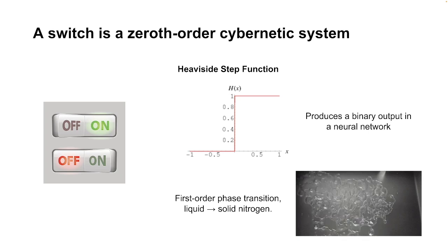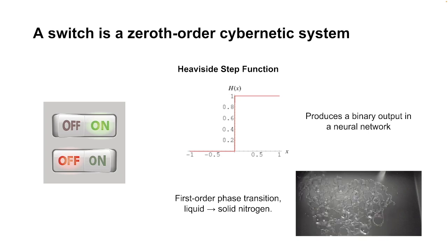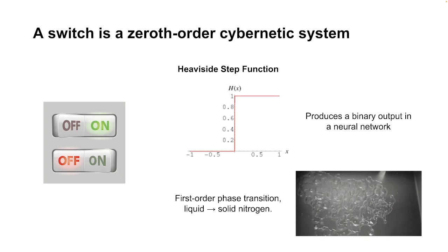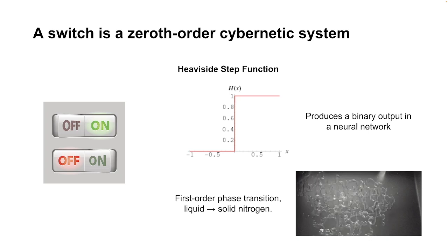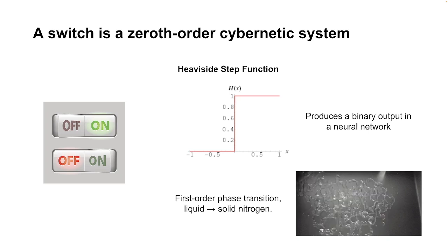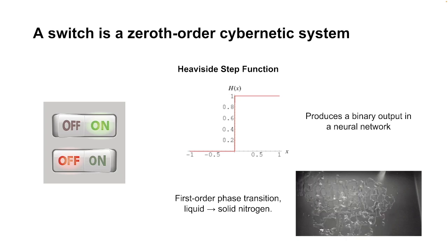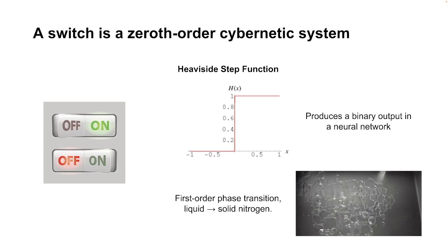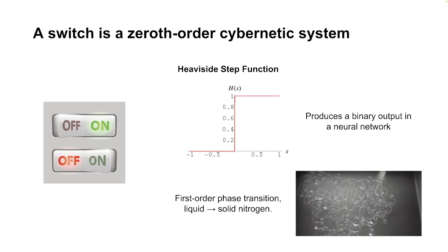This can produce a binary output in a neural network with the Heaviside step function, but in physical systems it can also do interesting things. On the lower right-hand side there's a first-order phase transition when going from liquid to solid nitrogen. We can model a phase transition with a switch, though there's a lot underlying this first-order phase transition which we're not going to discuss in detail — just to get this concept in mind.